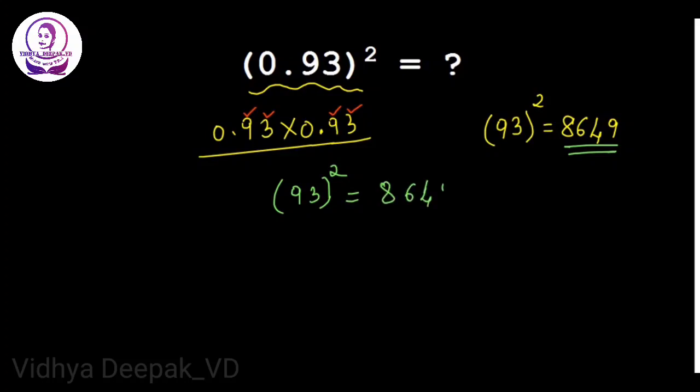So how many digits do we have to leave? 1, 2, 3, 4. So we have 1, 2, 3, 4. After leaving 4 numbers we have to put a decimal point, so that means our answer becomes 0.8649. So this is the answer for 0.93 the whole square. Easy, right?